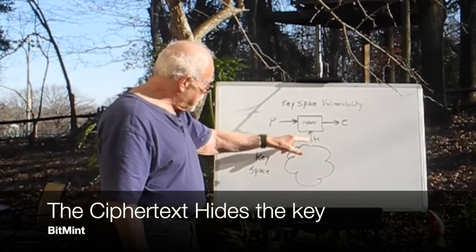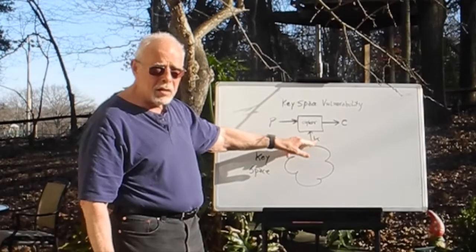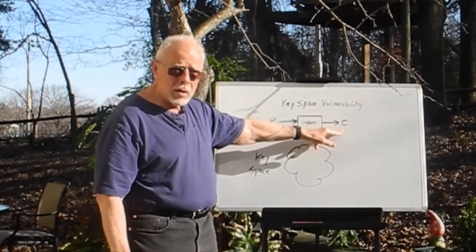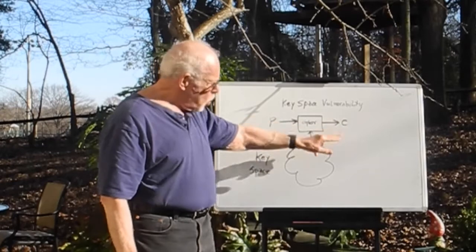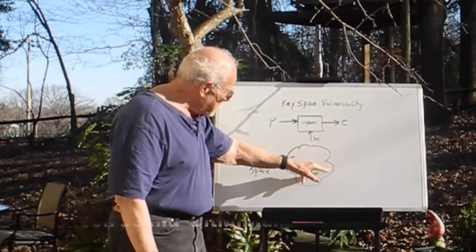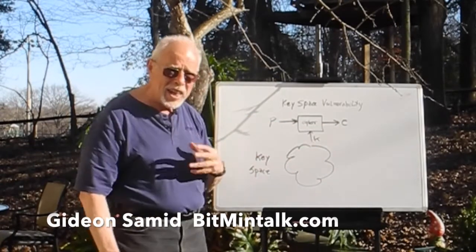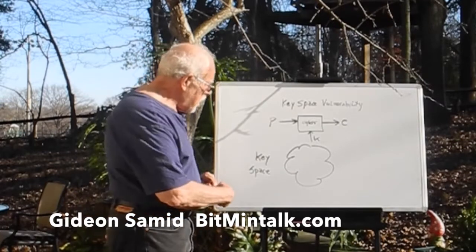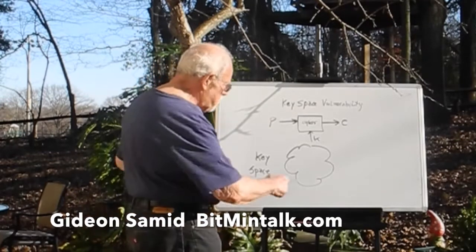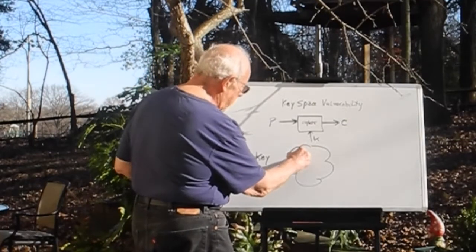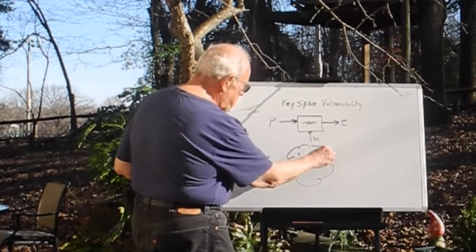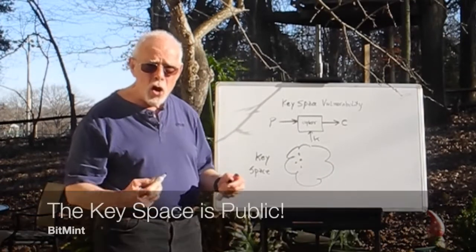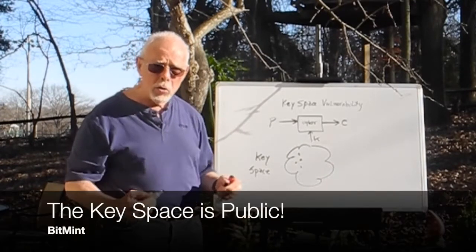This key that we select in order to build the ciphertext, we select from something that we call a key space, which is a collection of numbers from which we have to select one randomly.